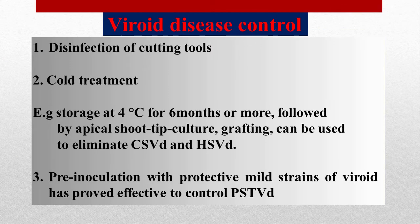Let's discuss about viroid disease control. Viroid disease can be controlled by three treatments: disinfection of cutting tools; cold treatment or storage at 4 degrees centigrade for 6 months or more, followed by apical shoot tip culture; and grafting, which can be used to eliminate CSVd and HSVd. The third method is pre-inoculation with protective mild strains of viroid, which has proved effective to control PSTVd.